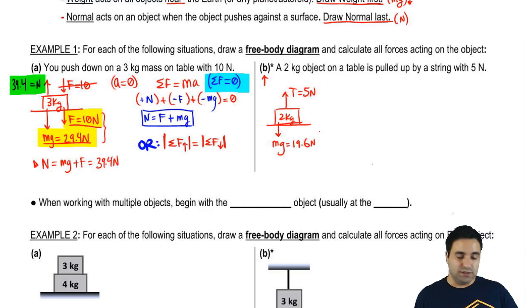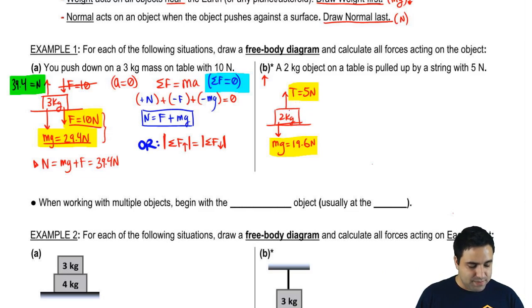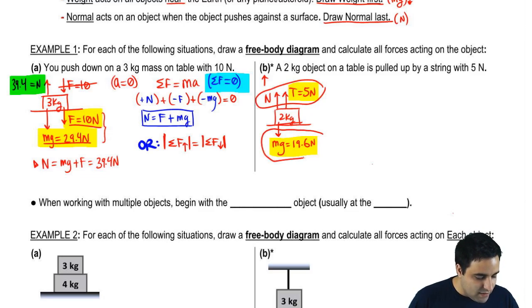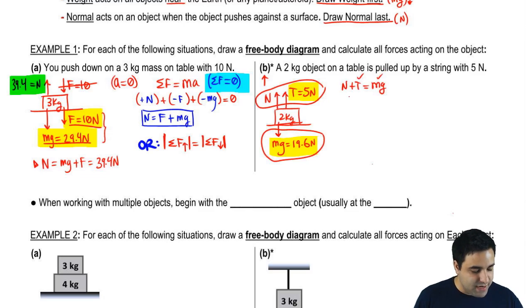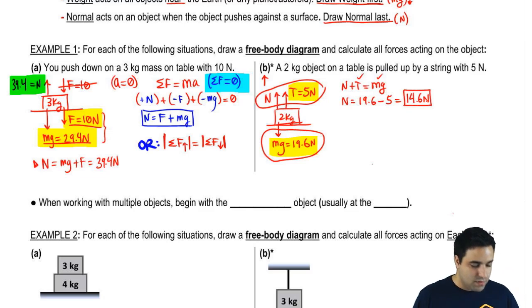The question is, are there any other forces? Is there normal here? If I'm being pulled up with a force of five, but mg is 19.6, that five is not enough to lift me off of the table. That means I'm still going to be pushing a little bit against that table, so there's still going to be a little bit of a normal force. The setup is: all the forces going up equal all the forces going down, so n plus t equals mg. I know t and mg, so n equals mg minus t, which is 19.6 minus 5. So normal is 19.6 newtons.